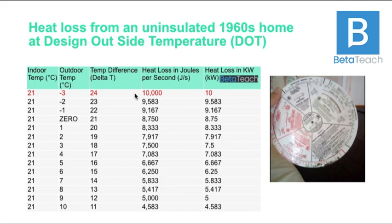When we do a heat loss calculation, we're working out how quickly heat moves through a particular home when it's minus three outside — a difference of 24 degrees from our 21-degree indoor target. If we know that speed, that's the speed we have to push heat into the home. Lots of people confuse heat and temperature — they're related but different things. Temperature is the zeroth law of thermodynamics; heat, which is energy, is the first law; and the second law is entropy.